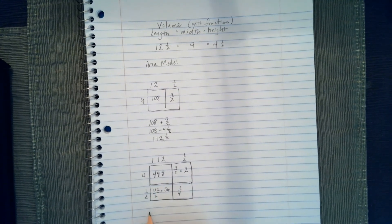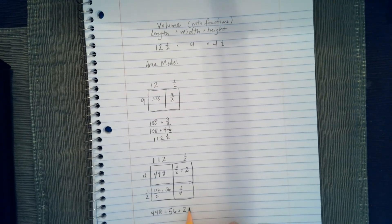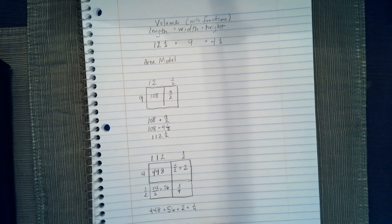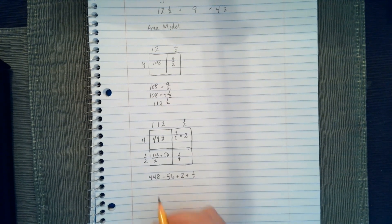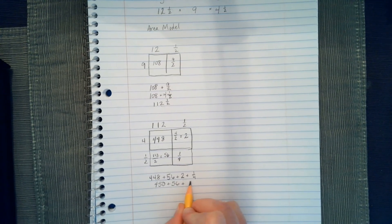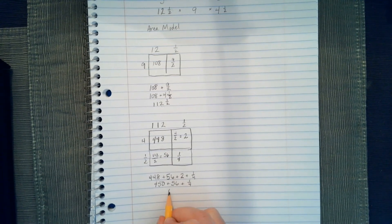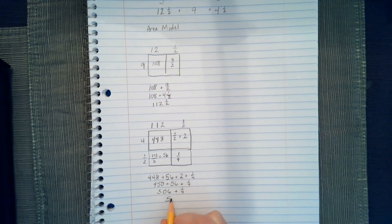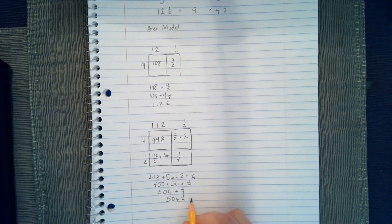So now we're going to add everything that's in the boxes, 448 plus 56 plus 2 plus 1 fourth. Now, it doesn't matter how we add these together, what we could do is if we take 448 and add 2, that will give us 450 plus 56 plus 1 fourth. I'm going to add 450 and 56, and I'm going to get 506 plus 1 fourth. My final answer becomes 506 and 1 fourth inches cubed.